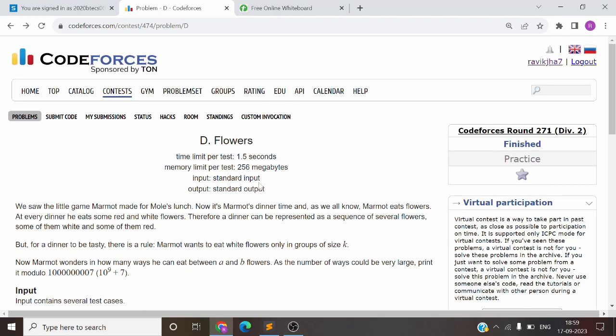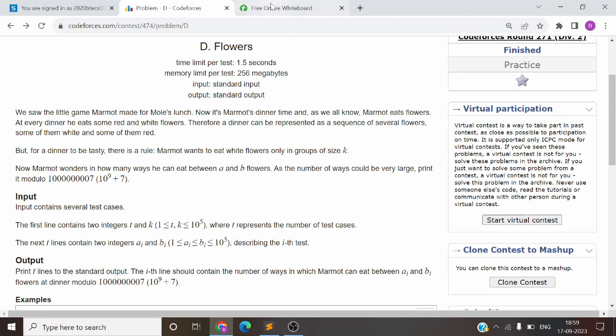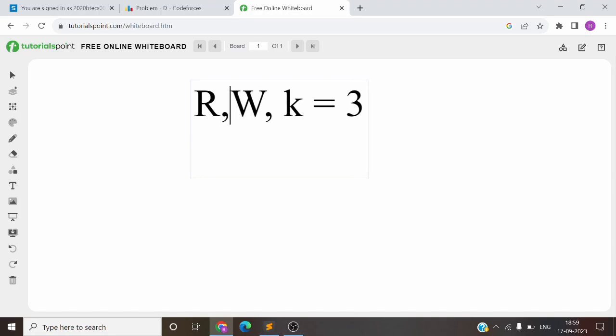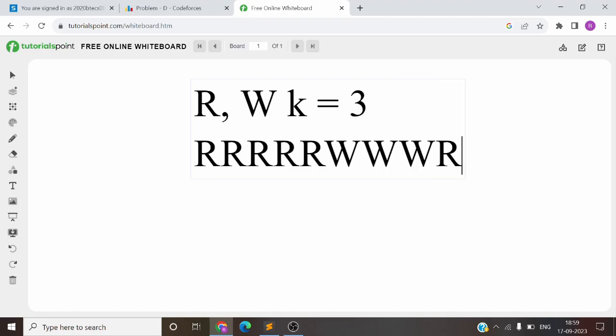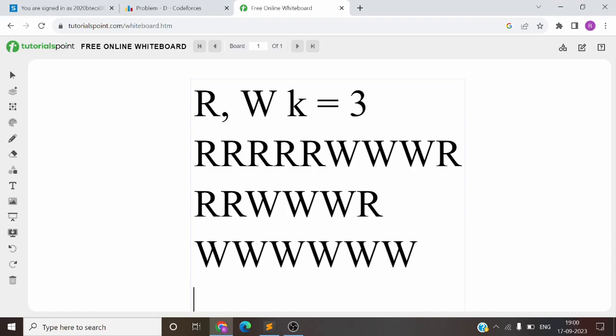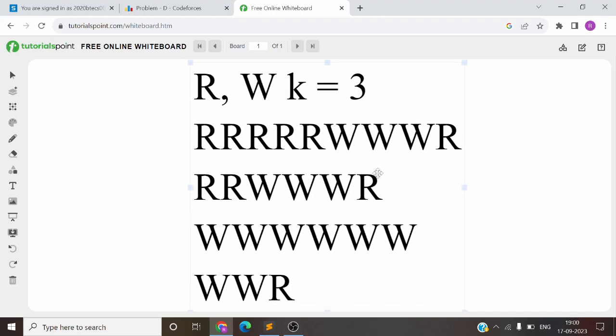We will have a lot of problems, and the famous problem is Flowers. So what is the problem? I will explain. There are two types of flowers, red and white, and one key value. You are allowed to eat red flowers, but when you are eating white flowers, you have to eat them in a group of k only. This means this is a perfect combination.